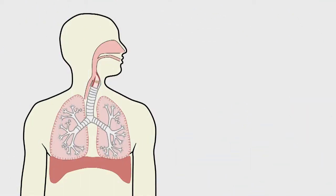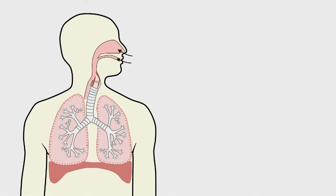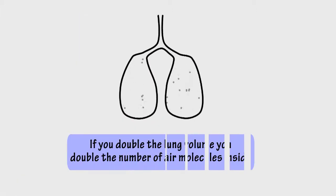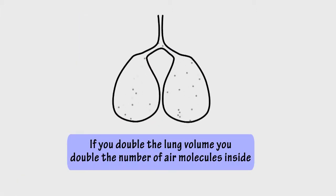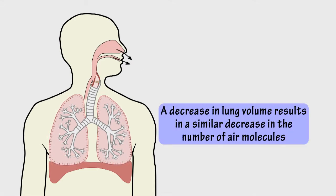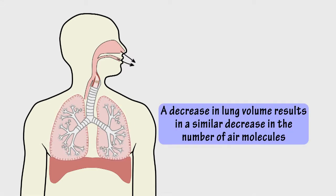Breathe in. As the muscles of your diaphragm contract, the cavities in your lungs expand, and air rushes in to fill up the space. The direct proportionality means that if you double the volume of space inside your lungs, you double the number of molecules of air in them. Similarly, when you breathe out and your lungs shrink, the number of air molecules in them decreases by the same proportion.